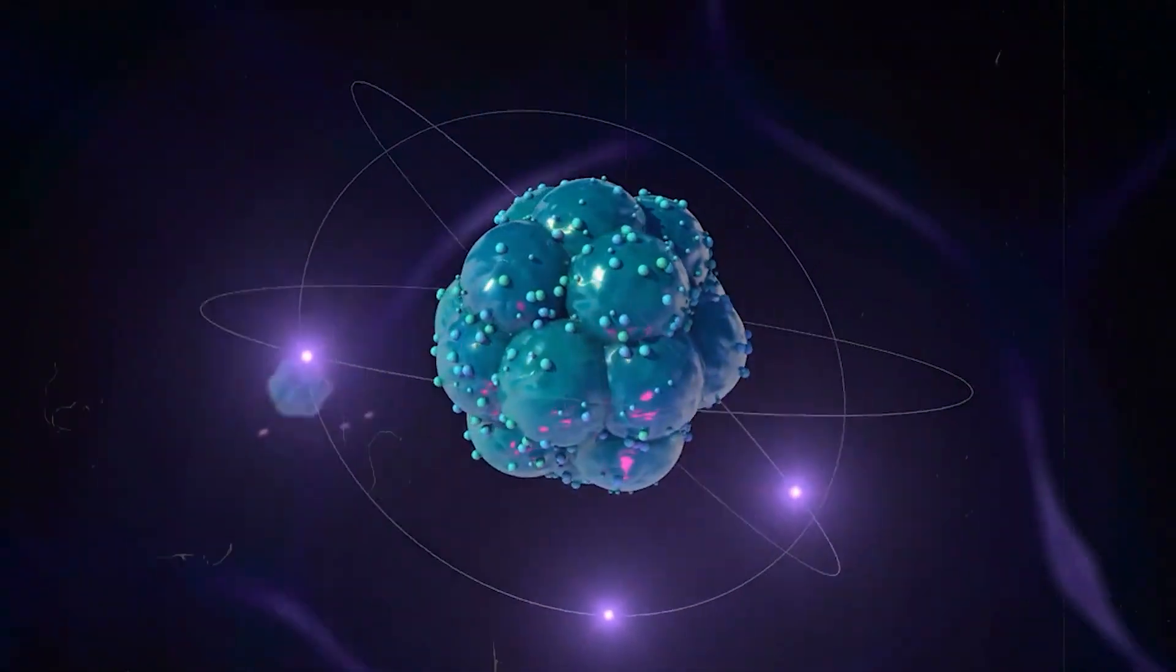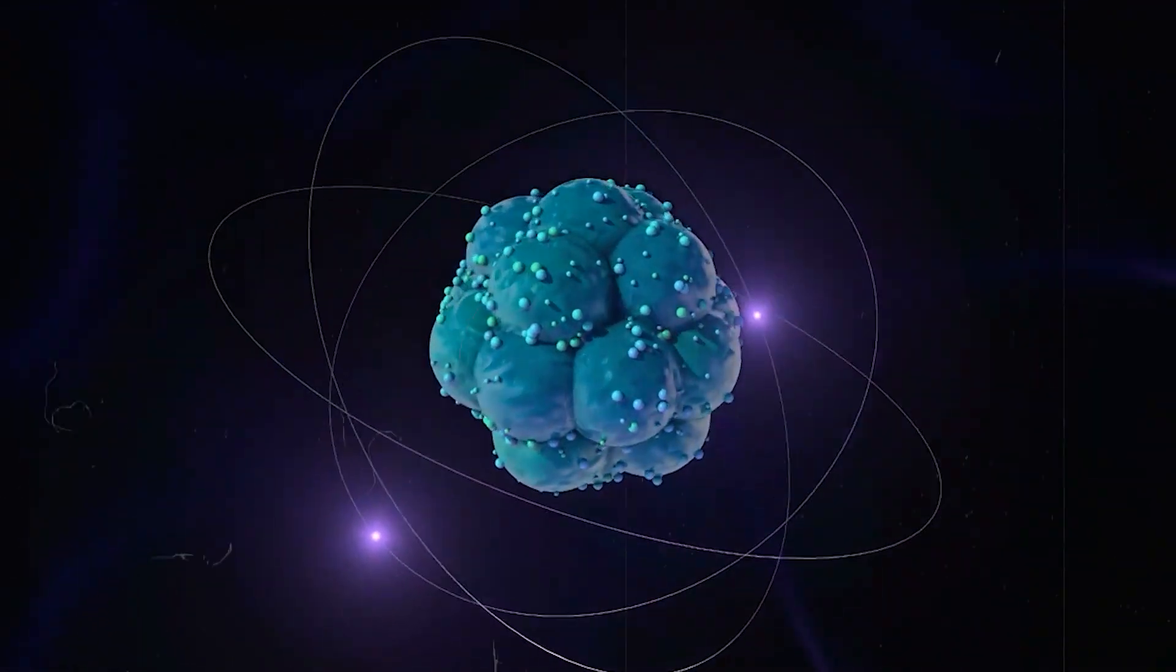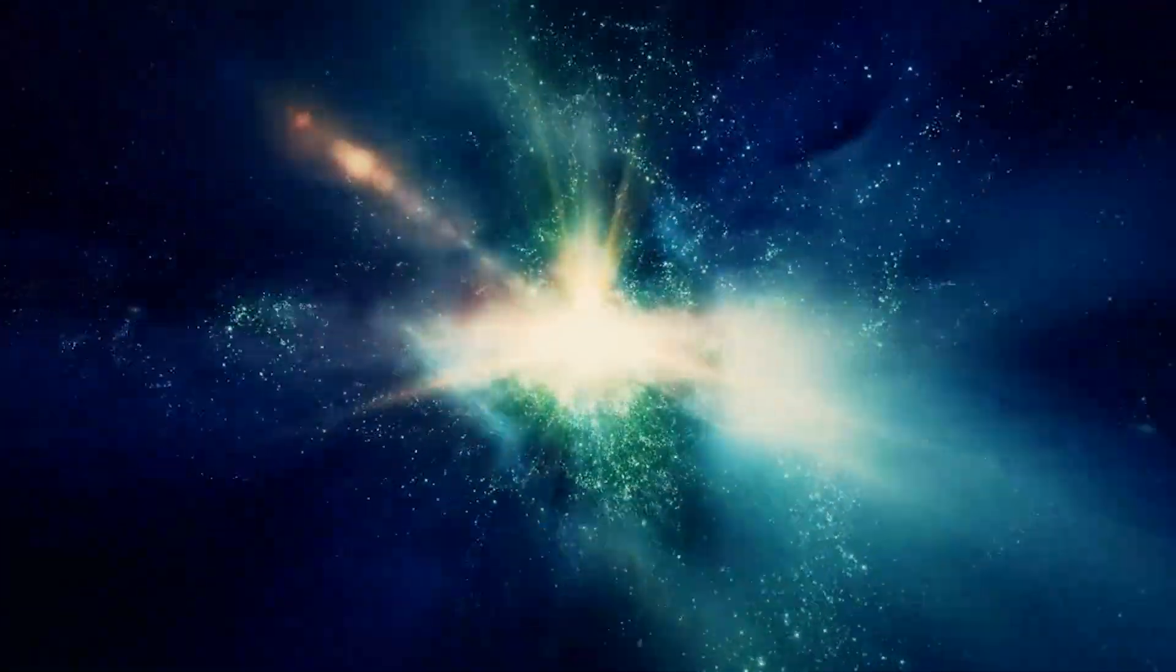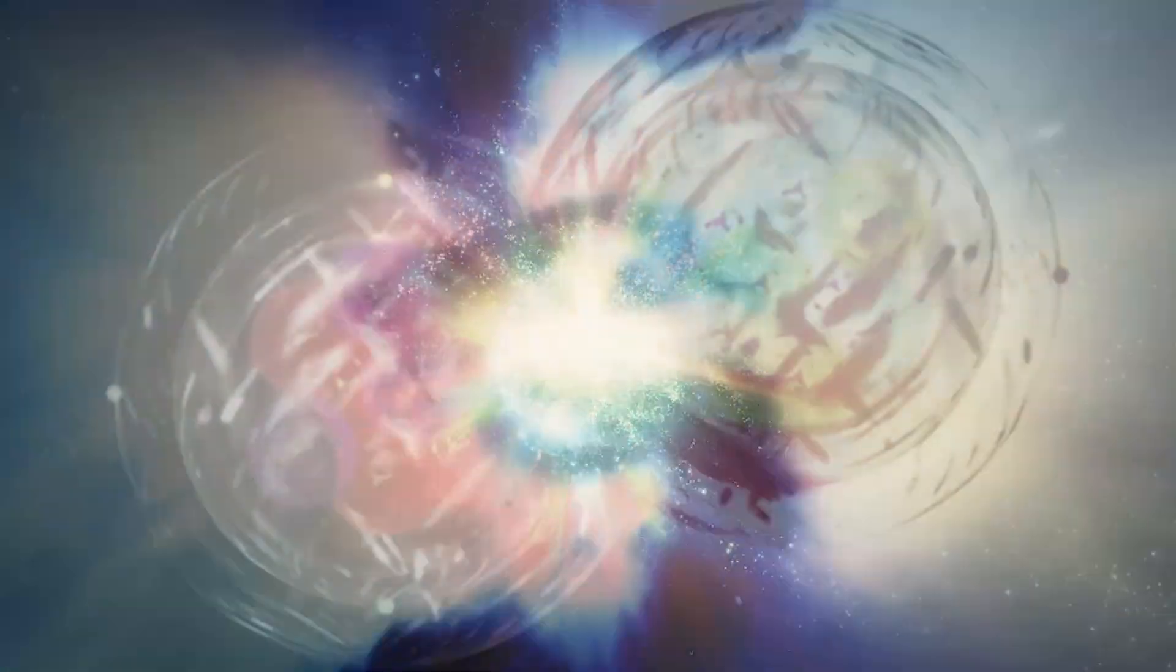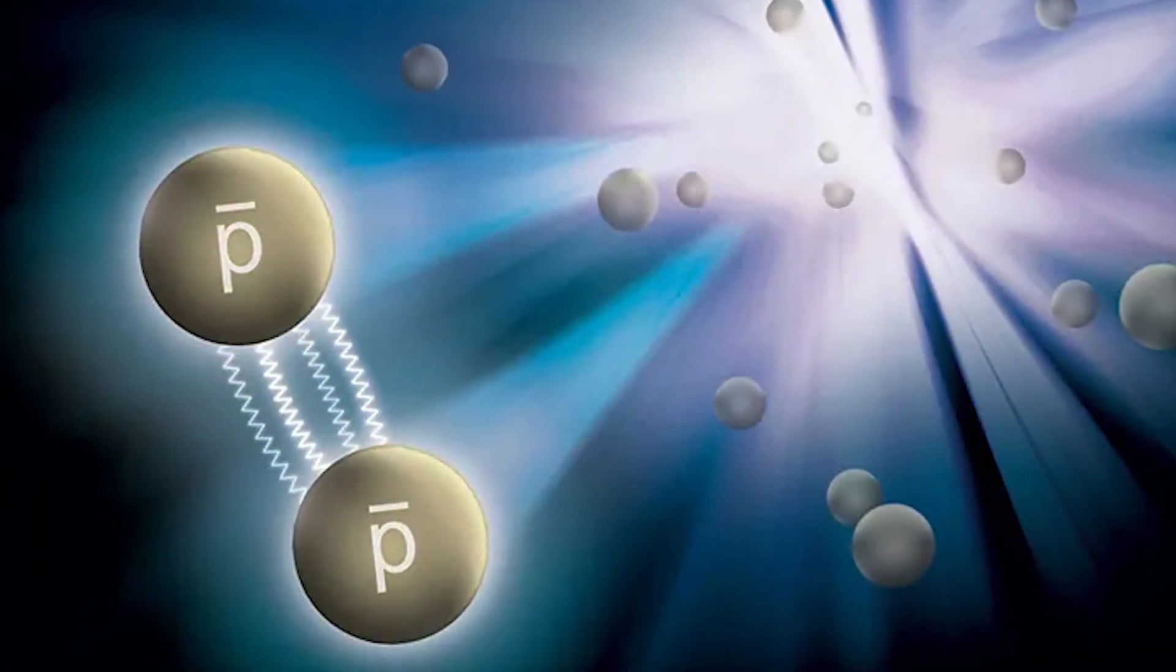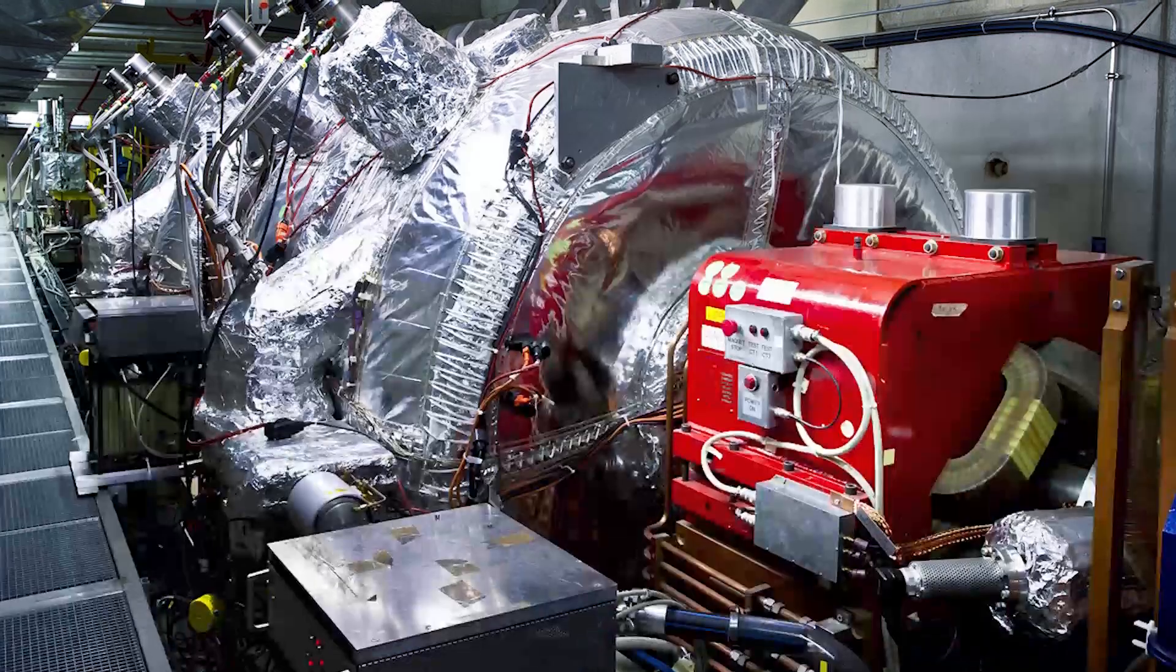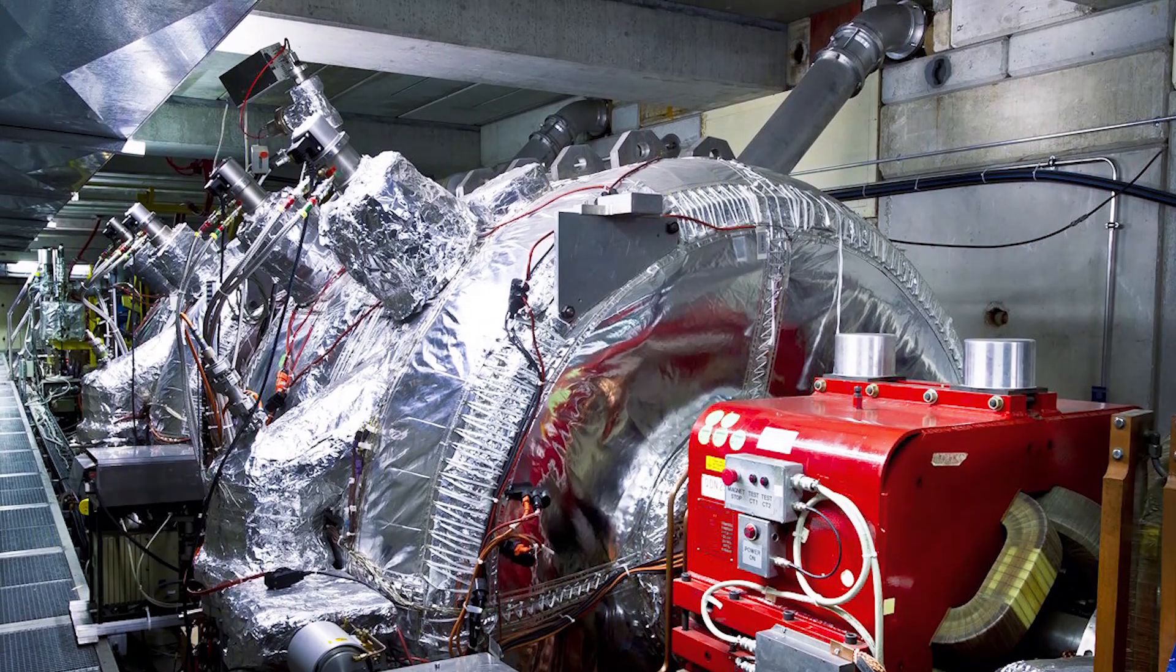Antiprotons are the antimatter counterparts of protons, with the same mass but opposite charge. The production of antimatter through proton-proton collisions is a probabilistic process. Not every collision will result in the creation of antimatter. In fact, only a small fraction of collisions will produce the desired antiprotons. This is why antimatter production is such an expensive and resource-intensive process.